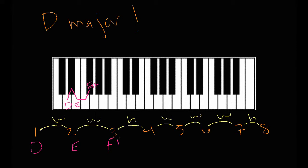F sharp is the third note in the scale. And then from F sharp we go a half step up to the fourth note, which is G. Then from the fourth note to the fifth note we go a whole step: from G to G sharp, which is a half step, and then another half step to A. So the fifth note of D major is A. Then we go from the fifth note to the sixth note, a whole step: A to A sharp to B. So the sixth note in the D major scale is B.